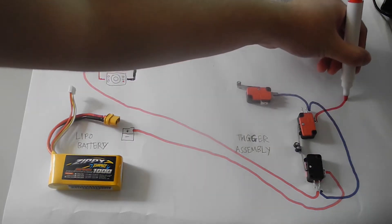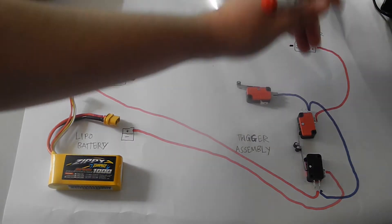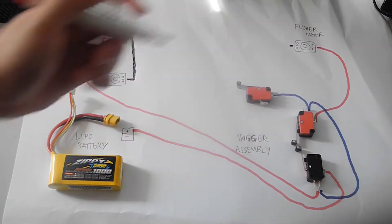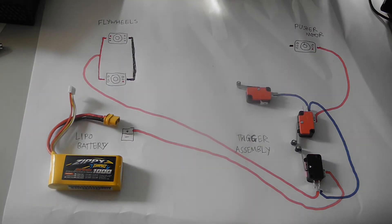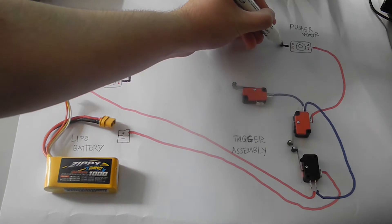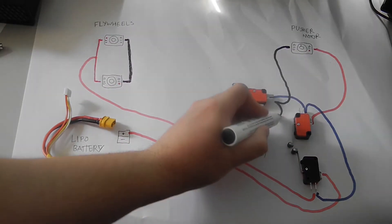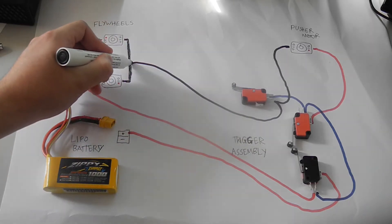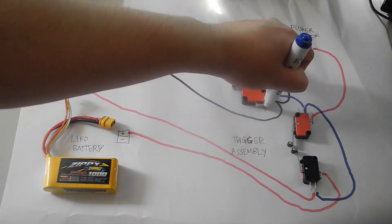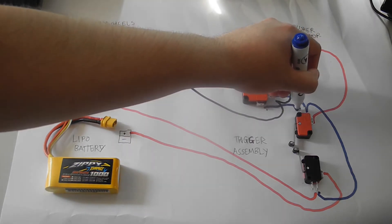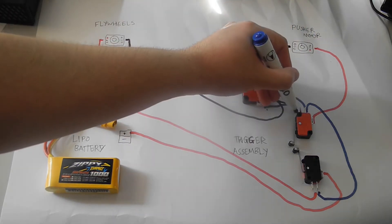Then take a red wire from the common on the main trigger to the pusher motor. In order to complete the pusher circuit, a black wire will go from the pusher motor to the normally open of the pusher return switch and continue to the negative on the flywheels. Then connect a wire from the common of the pusher return switch to the normally closed on the trigger switch.